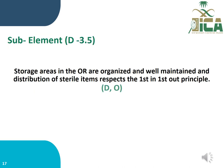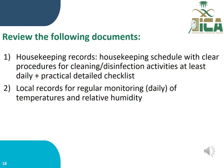Sub-element D3.5: Storage areas in the OR are organized and well maintained, and distribution of sterile items respects the first-in-first-out principle. This is done by documentation and observation. Review the following documents: housekeeping records including a housekeeping schedule with clear procedures for cleaning and disinfection activities at least daily, practical detailed checklists, and local records for regular daily monitoring of temperature and relative humidity.